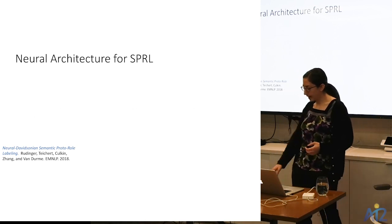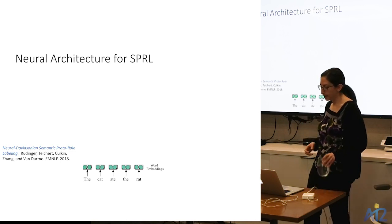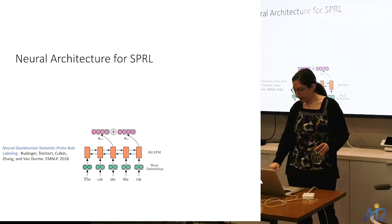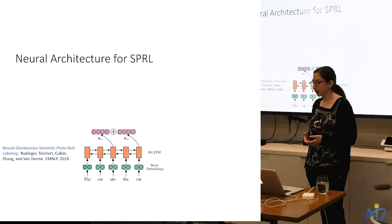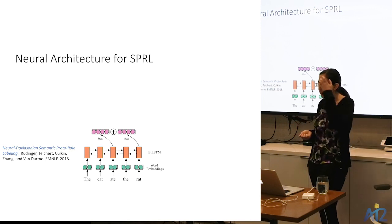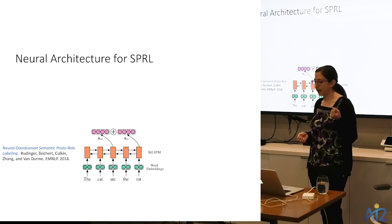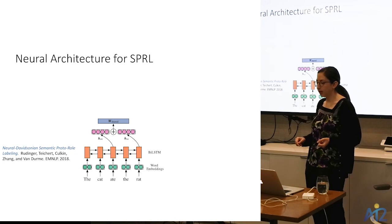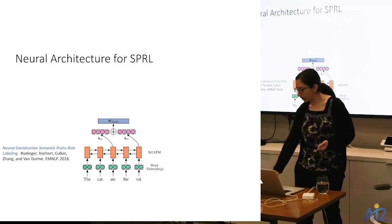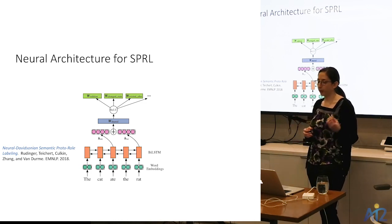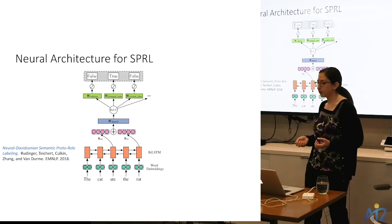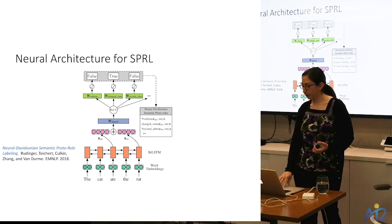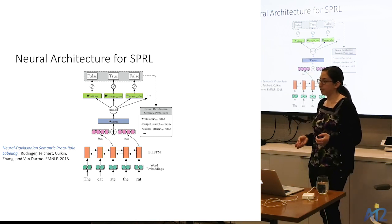I also developed a neural model for this task called the Neural Davidsonian model. We use pre-trained word embeddings and run a bidirectional LSTM over them. We take the hidden states corresponding to the syntactic head of the predicate and the syntactic head of the argument and concatenate them. We pass this through a shared linear projection with parameters shared across all proto-role properties, then through separate linear projections for each property, yielding predictions for each proto-role property with respect to the predicate-argument pair. From these predictions, we can formulate a Neo-Davidsonian-like representation of the event.